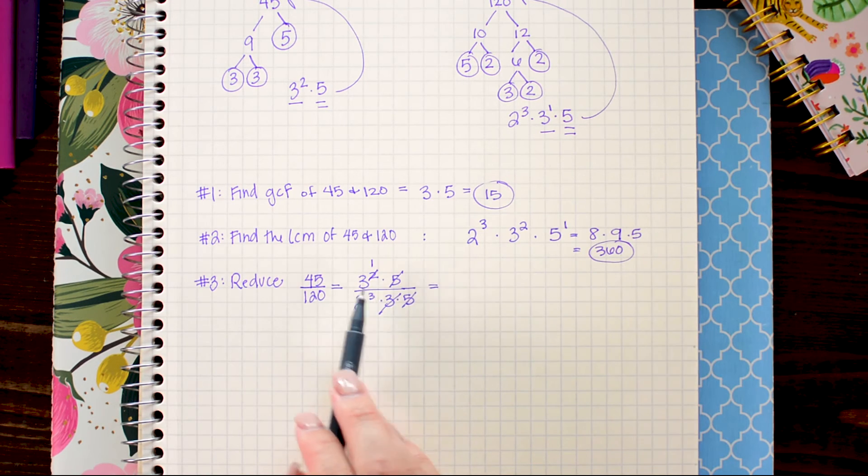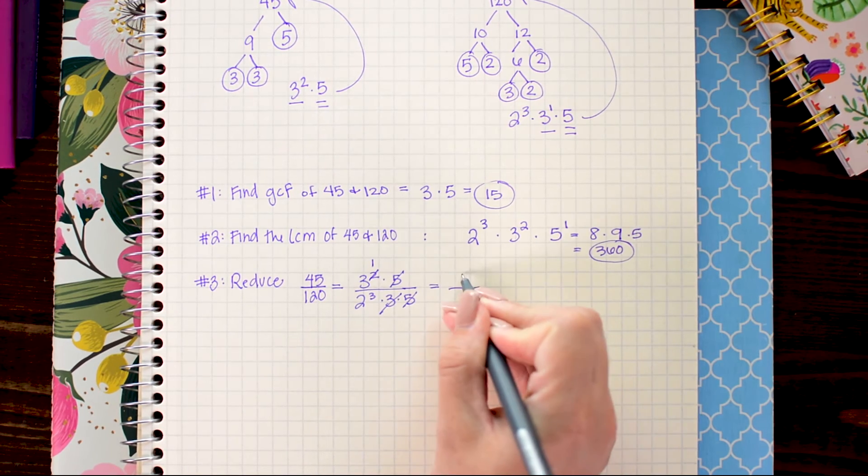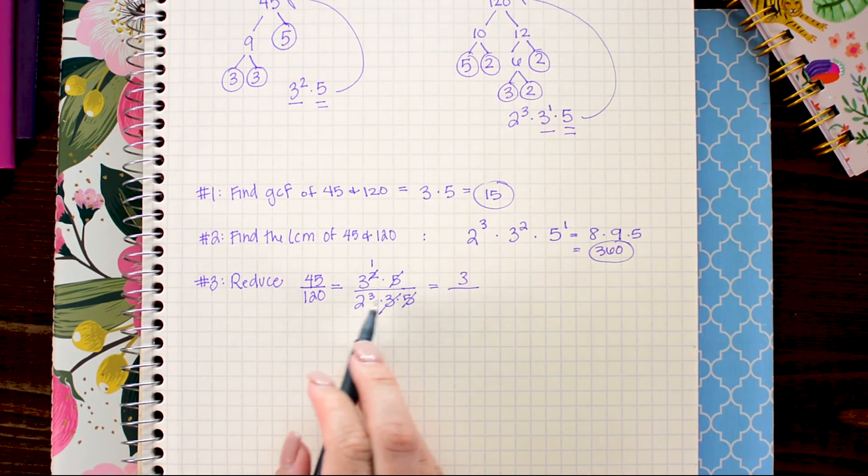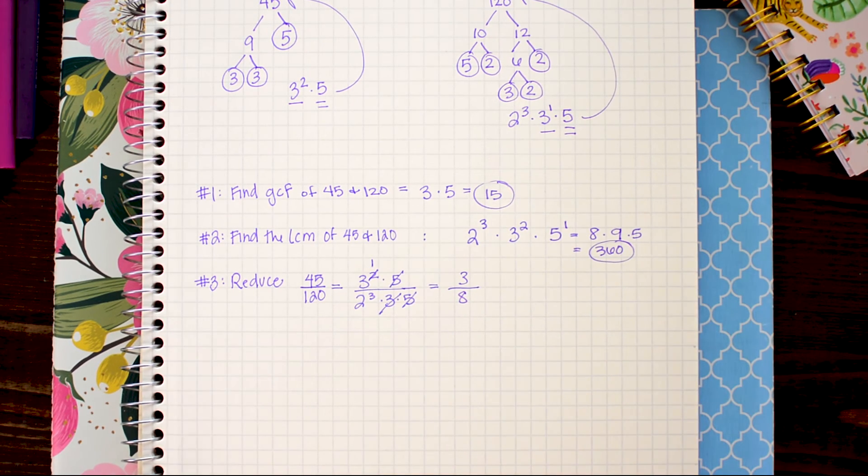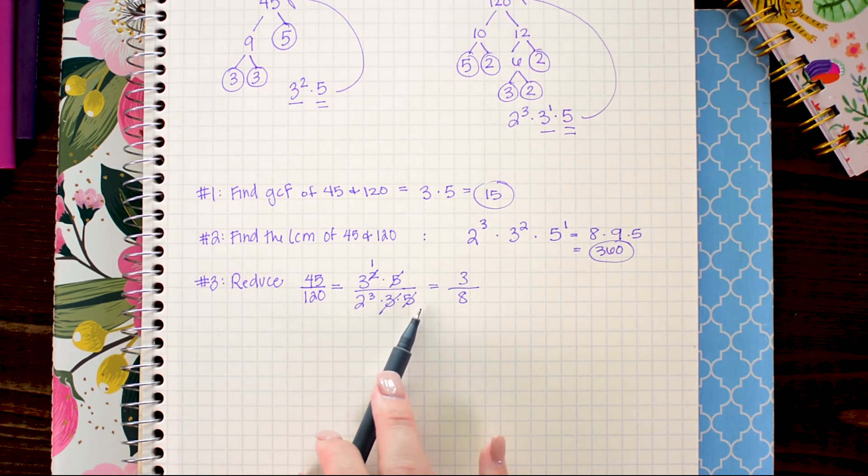Now all that's left to do is go ahead and multiply these out. So I have 3 to the first power which is 3 and 2 to the third power which is 8. So I quickly and easily was able to reduce 45 over 120 with just a couple little cancellations.